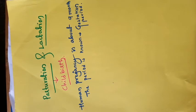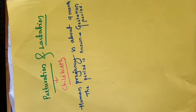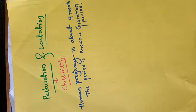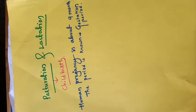The signal for parturition originates from the fully developed fetus. After the gestation period, the fetus completely develops and generates signals. Those signals are released by both the placenta and the fully developed fetus, which release androgen. The signal is in the form of androgen, and that androgen acts on the pituitary gland of the mother.